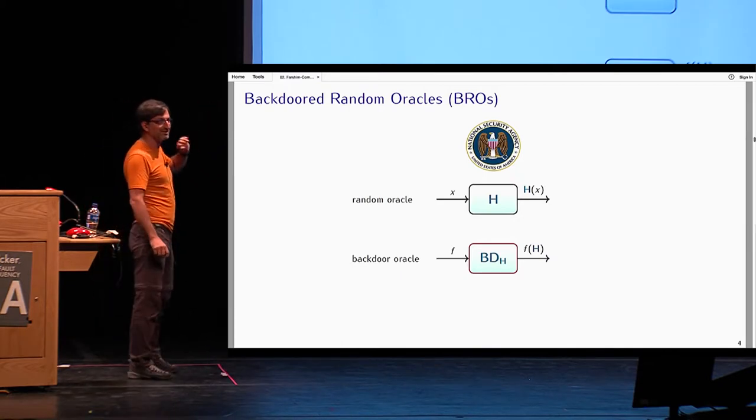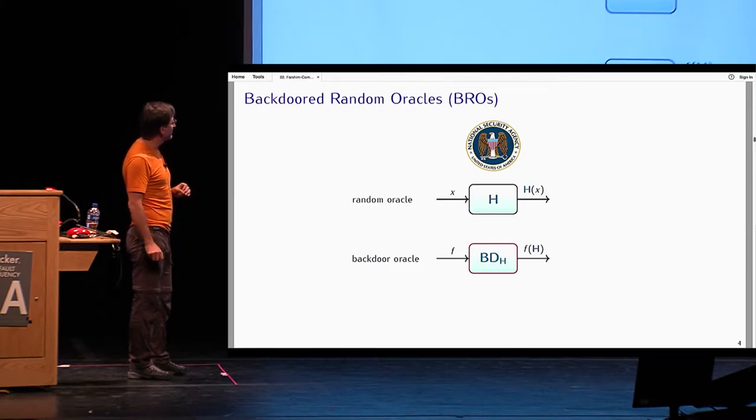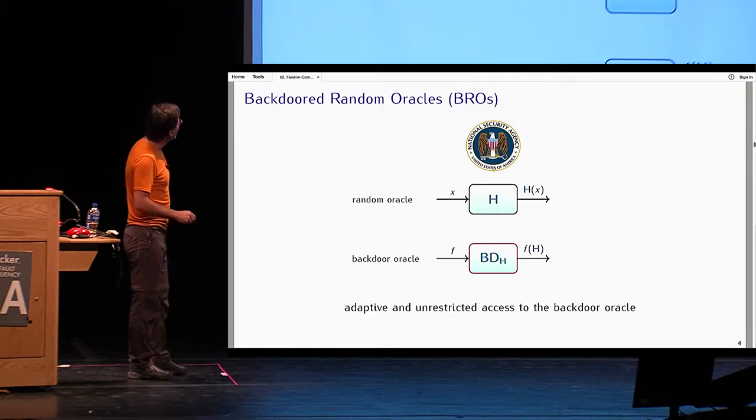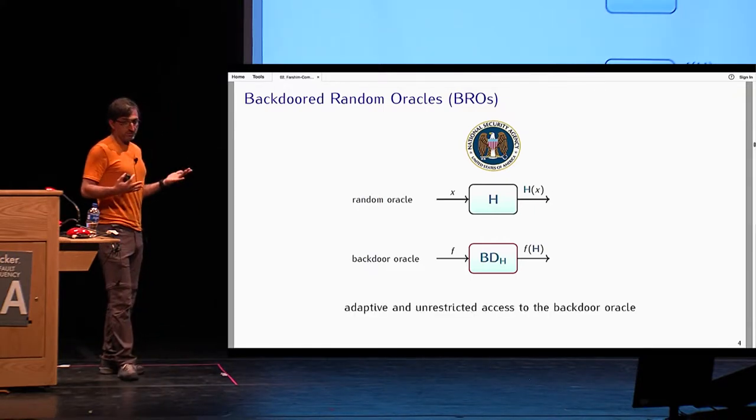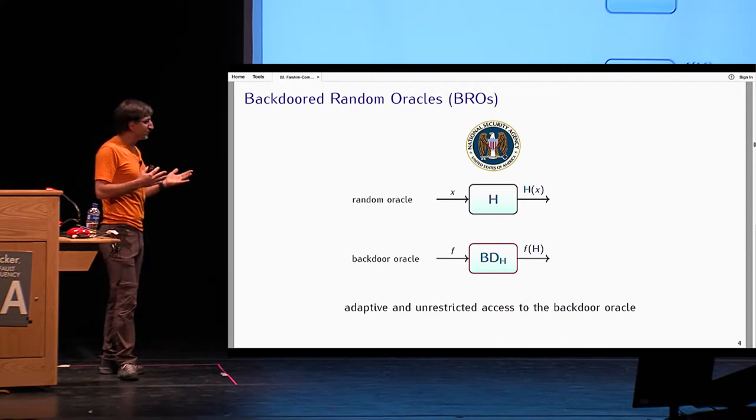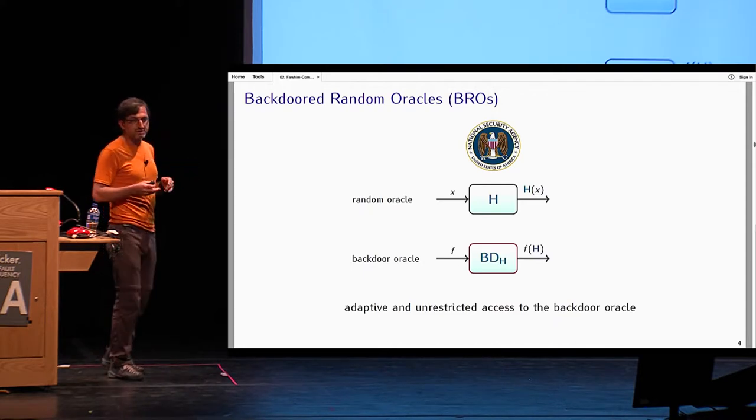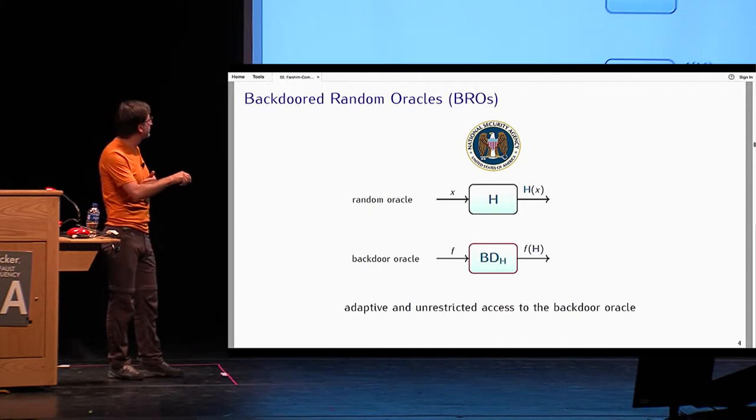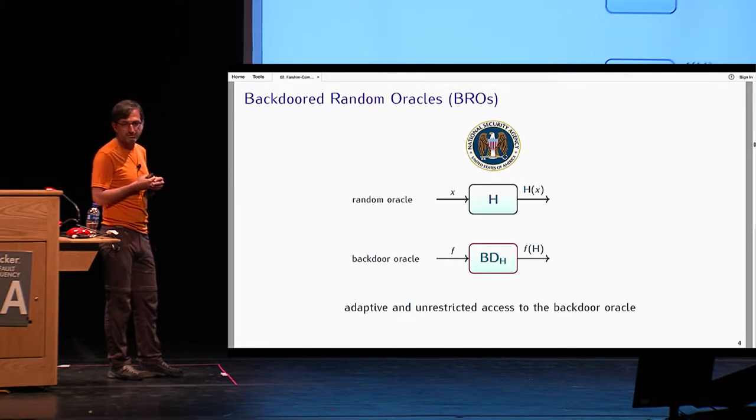It's important to understand what the input-output of this oracle is. Any function f, and you output the function of the truth table of the random oracle. We call this the backdoor oracle. In our model, we assume that the adversary has adaptive and unrestricted access to the backdoor oracle. The set of functions that the adversary can choose could be arbitrary.